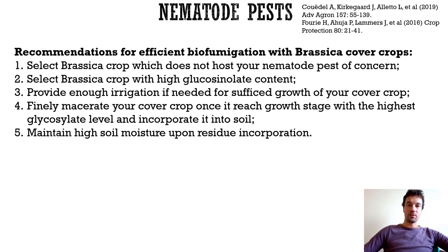Efficient disruption of Brassica crops during flowering, when isothiocyanate content in their tissue is highest, and immediate, even incorporation of residues through the soil profile where target nematode pests occur, are important for efficient biofumigation. Isothiocyanates have a half-life of maximum 10 hours in soil; therefore, irrigation after soil incorporation of brassica tissues is advisable because irrigation may carry the biofumigant compound deeper into the soil and prevent faster volatilization.